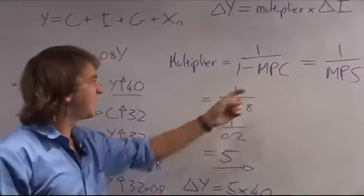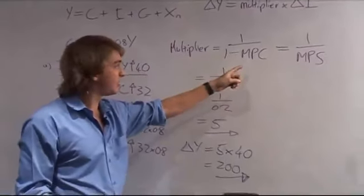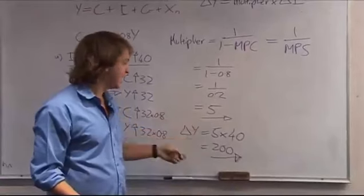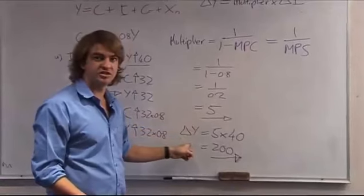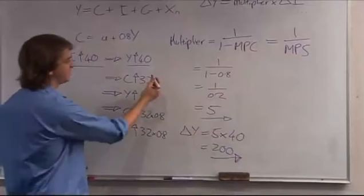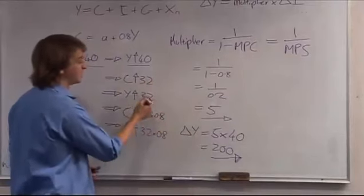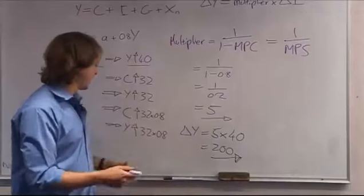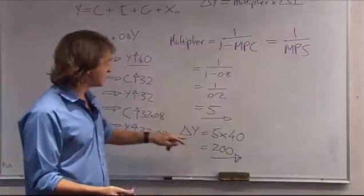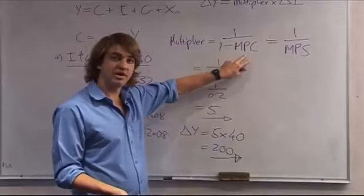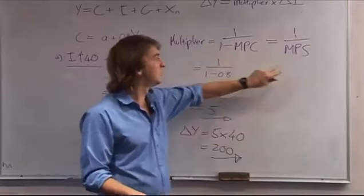Notice that the higher the value for the marginal propensity to consume, the larger the value of the multiplier, and the larger the eventual change in income or output. This makes sense because if you're multiplying by a larger margin each time, it's going to get smaller and smaller at a lot slower rate. So the change in income will be a lot higher the higher the value of the marginal propensity to consume, or the lower the value of the marginal propensity to save.